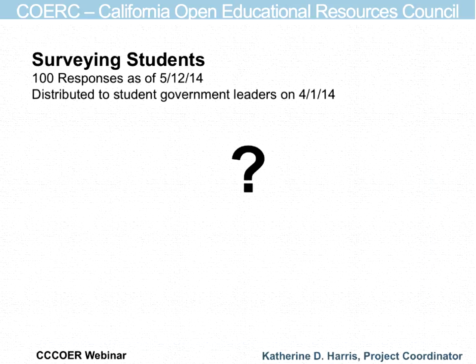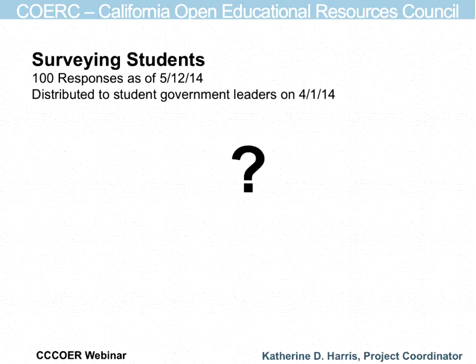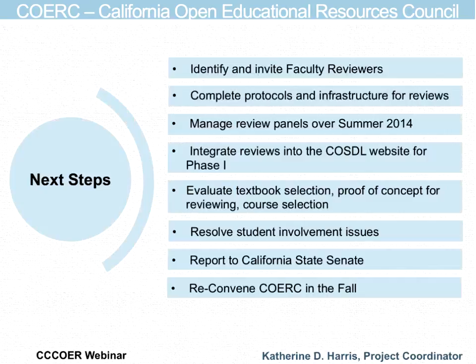When we surveyed students, we got 100 responses. Every time we go to see students, we open up the survey URL and say please take this right now — it only takes three minutes — and generally they do. One of the issues we have is really distributing the survey. The survey is the foundation of how we created our peer review rubric and how we're creating student involvement, so it's important to get more student surveys.